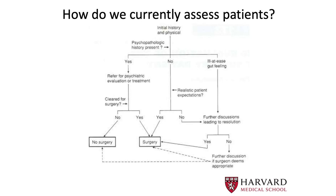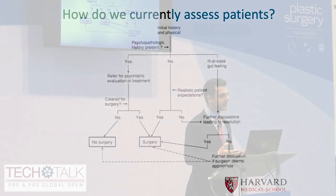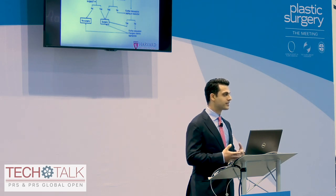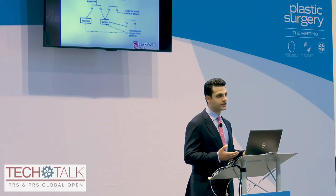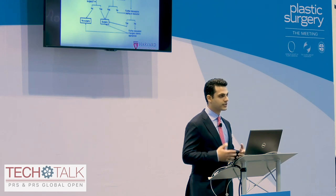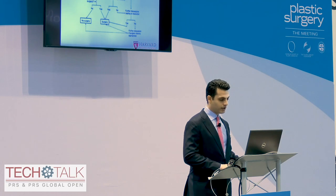This is an old algorithm by Dr. Goldwyn published in PRS, and it's essentially what we do today. We see a patient, we take a history and physical, and if there's any psychopathologic history present we may have them see a psychiatrist. If there's any indication the patient is not fit for surgery we would not operate on them — or if the patient doesn't have realistic expectations, or if we just don't have good rapport, we would exclude them from surgery. This is the model most people are using.